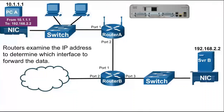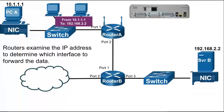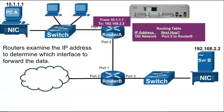In this example, PCA is sending a message to Server B, which is on a different network. This message, known as an IP packet, is sent to the local router, PCA's default gateway. When the router receives this message, it will examine the packet's destination IP address to determine where to forward the data.